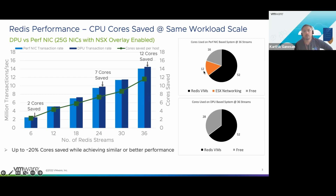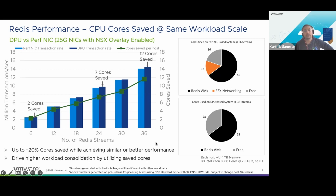We are saving about 12 cores out of the 64 cores we were previously using — that's about 20% of cores saved. While one might think this saves hardware costs, if you think about it, you could get rid of one out of five hosts in a data center. The idea is you save these 12 cores and can use them for other apps, or even for the same app, and you'll be able to consolidate more.